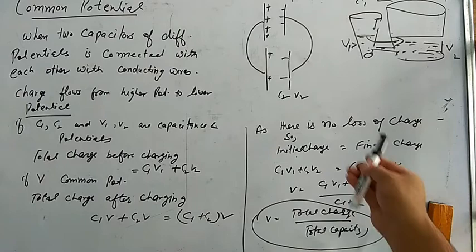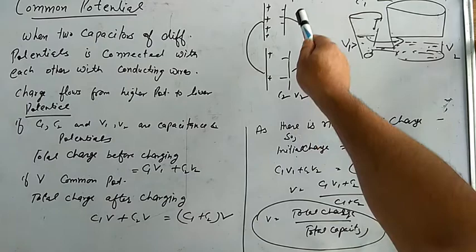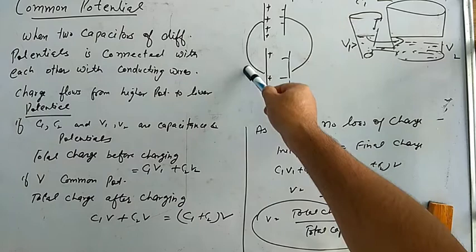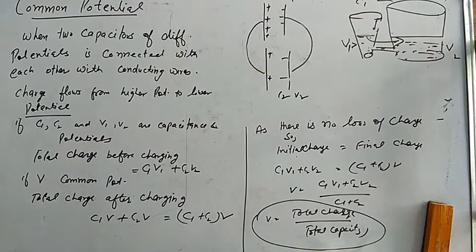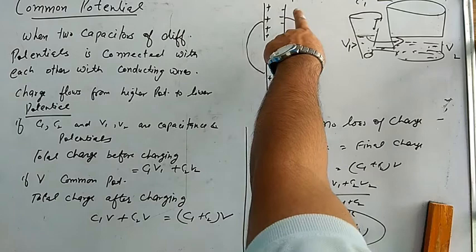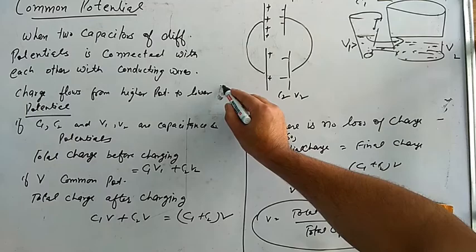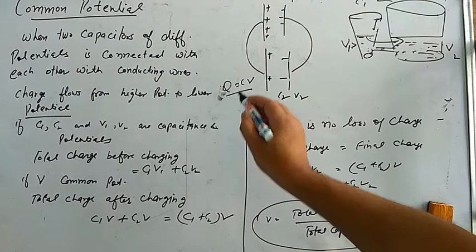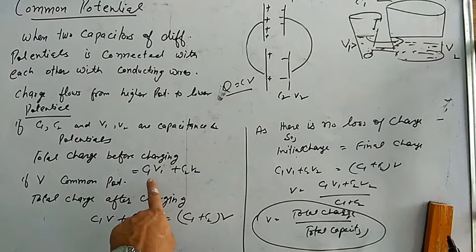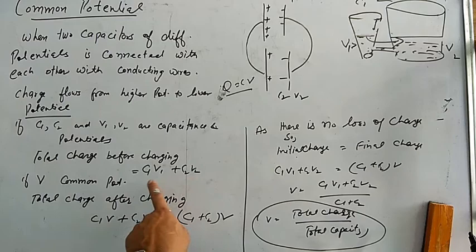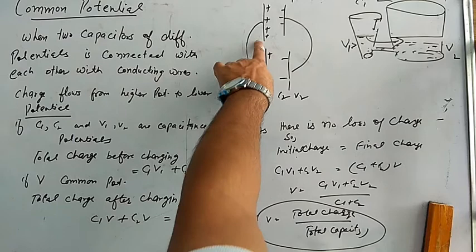Let us take two capacitors with capacities C1 and C2 and potentials V1 and V2. Charge does not matter initially. When connected in parallel (positive with positive, negative with negative), the initial charge on capacitor 1 is C1V1 and on capacitor 2 is C2V2. So the total initial charge is C1V1 + C2V2.